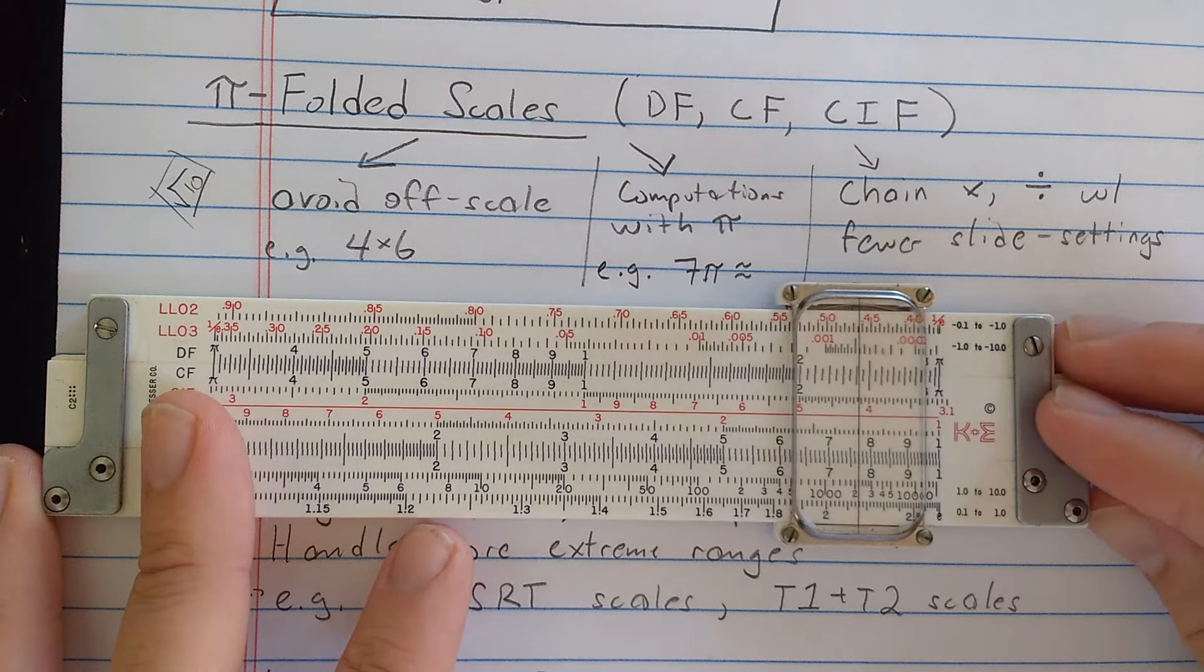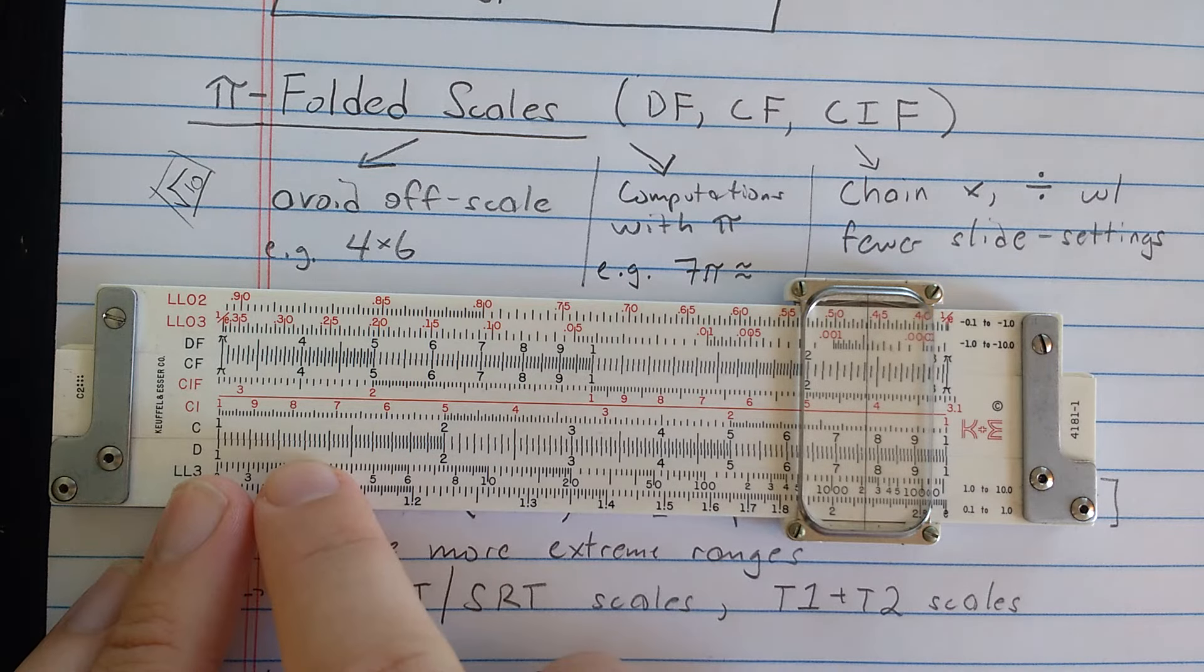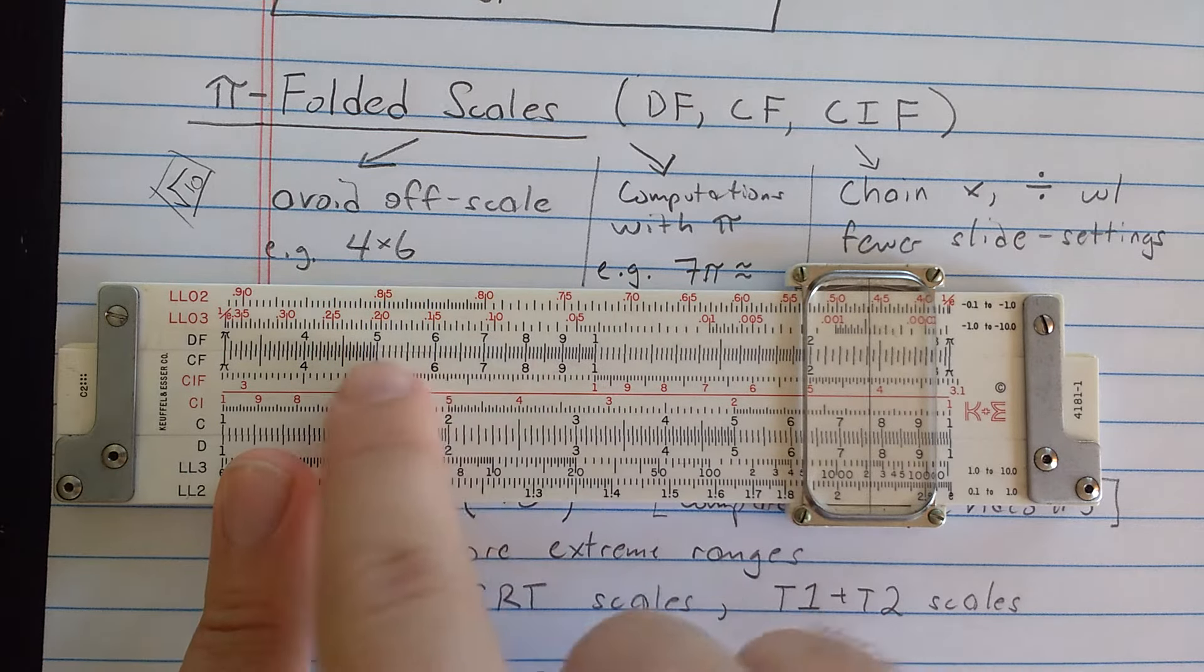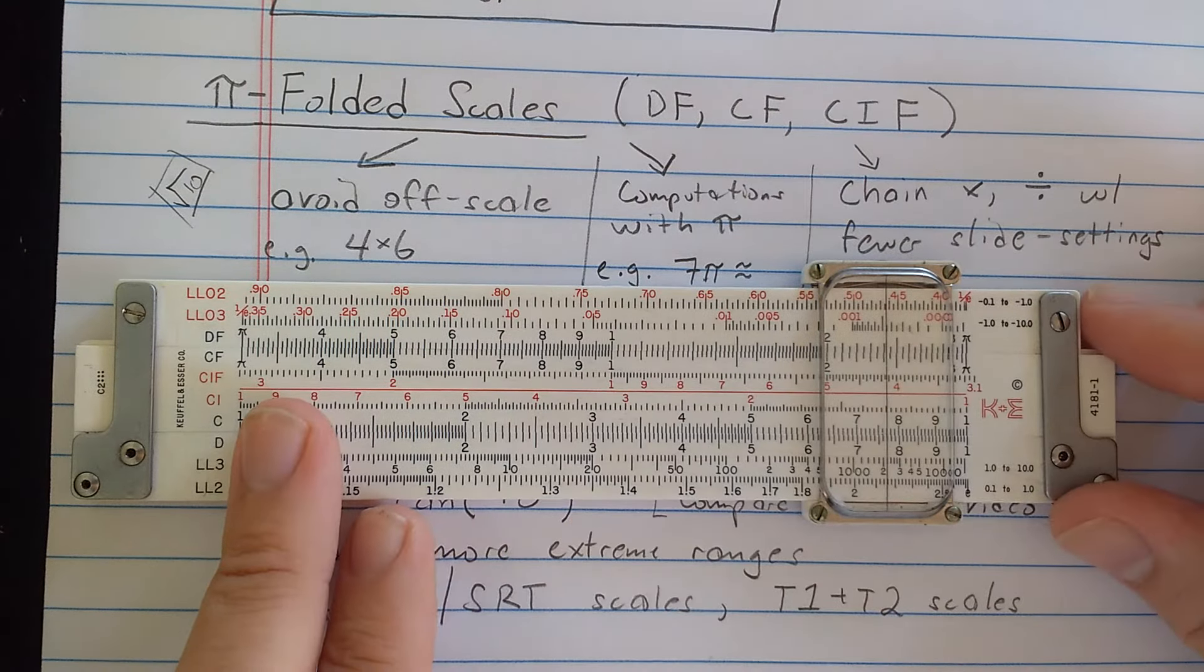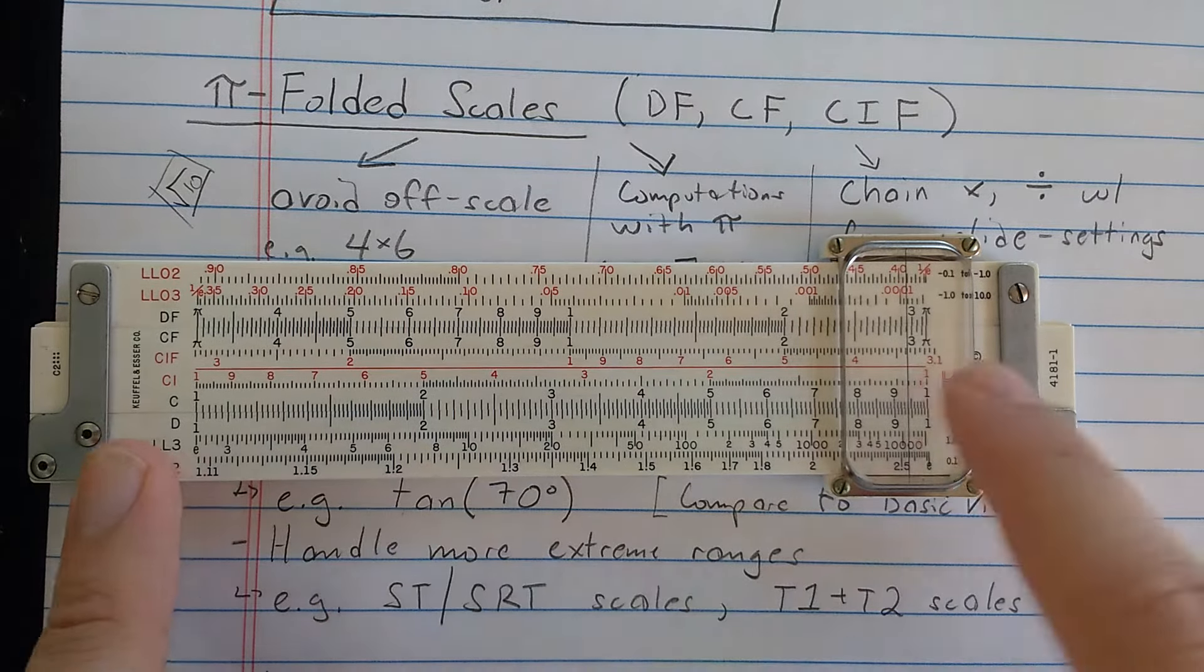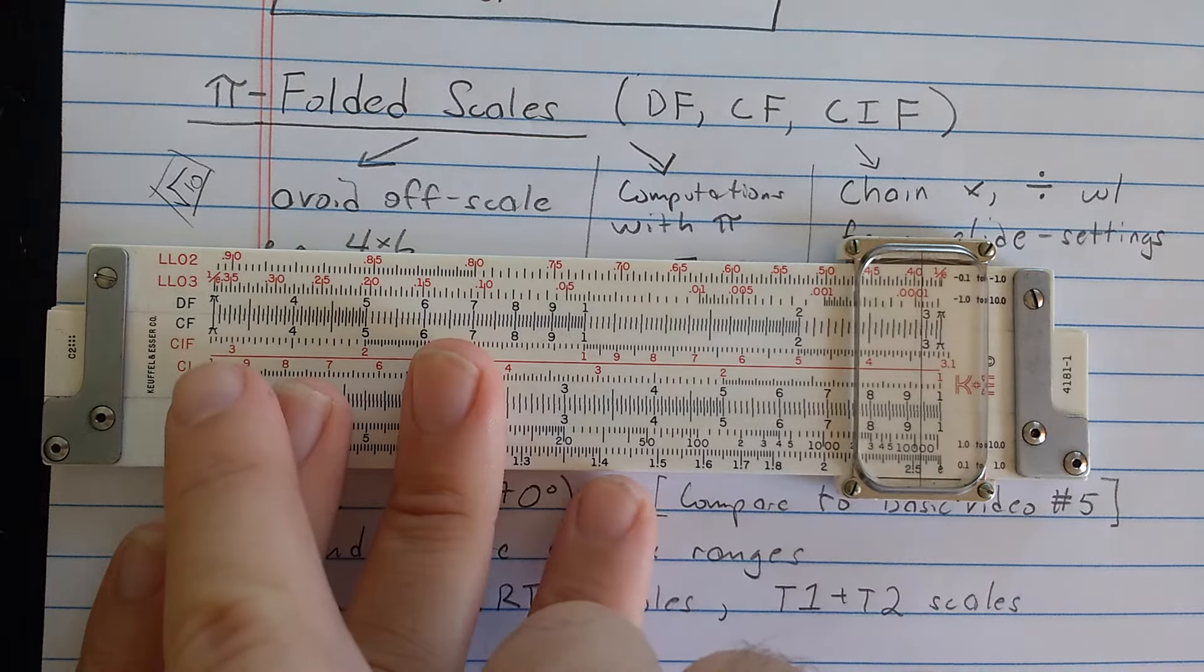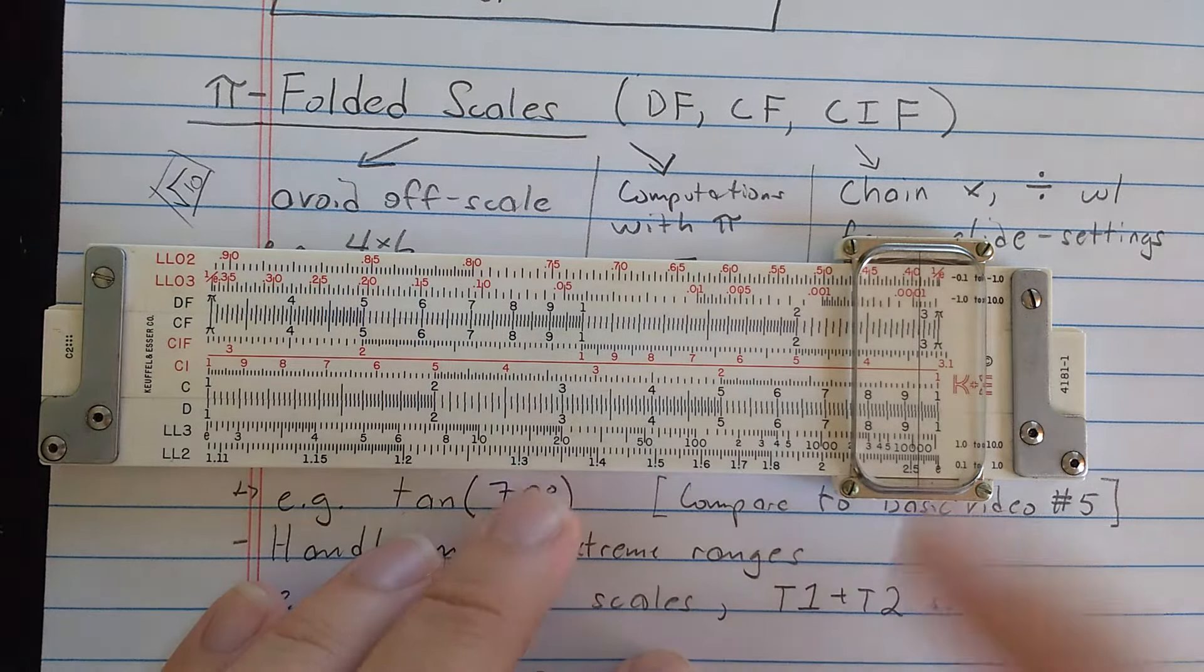Now what does it mean to be folded? It means what they did is they took a C and the D scale and remember these continue in both directions and they just slid it. So it's kind of like a pre-set, pre-setting of the slide except they're both set the same way. Right? So here the 1, you see here you see 1, 2, this is the same as over here. The 3, this region is the same. It's just all moved over and then that part comes folded around back which is normally over here.